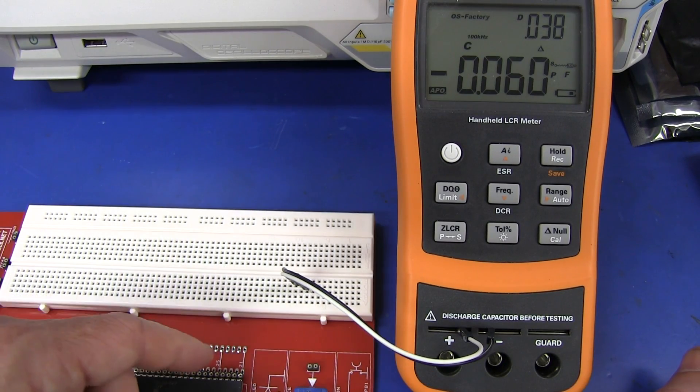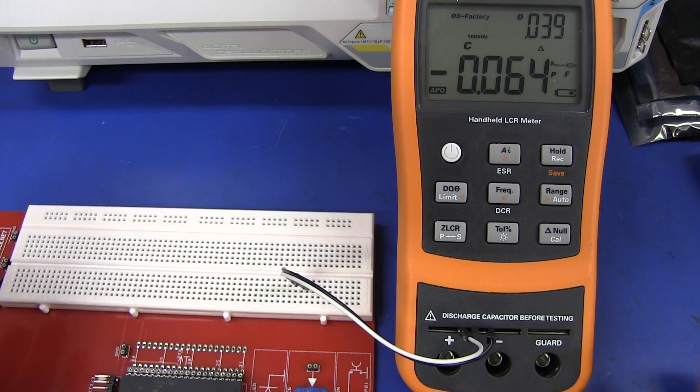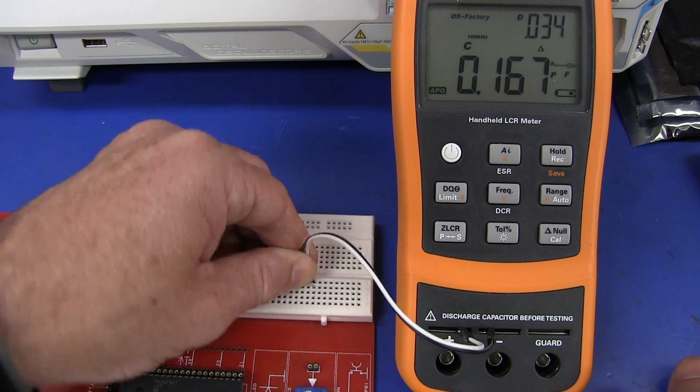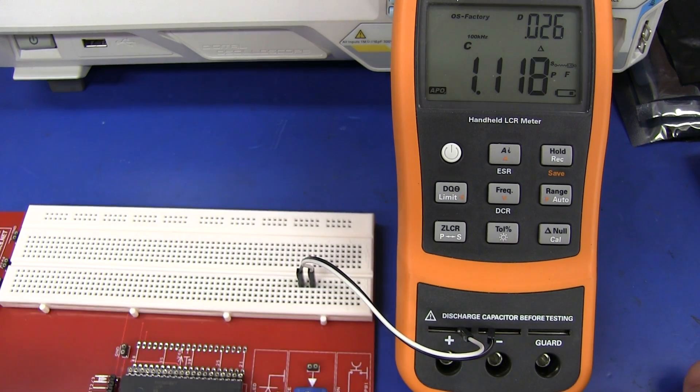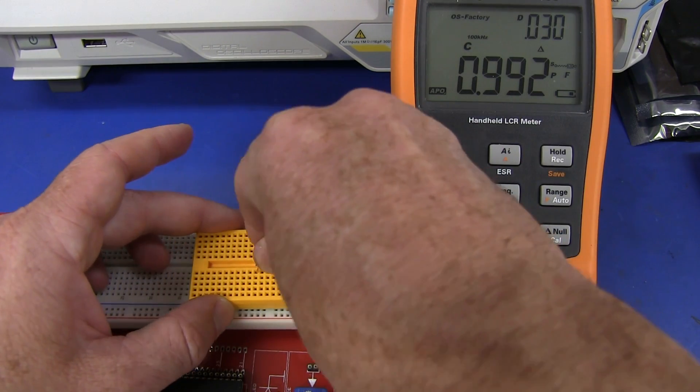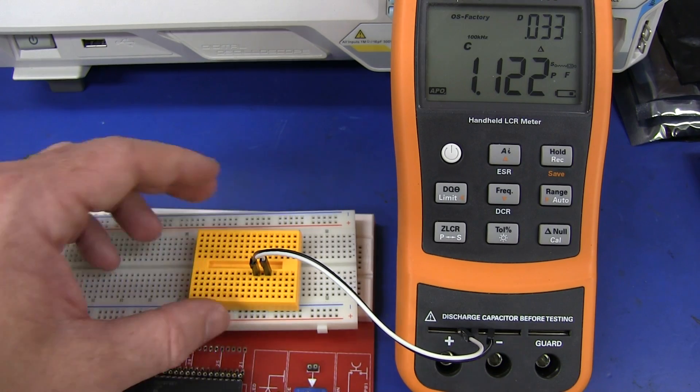One thing I haven't done yet, what is the capacitance between 2 contacts that are separated by 1 unused column? And of course, you'd expect it to halve. And yep, it does. And yep, it's the same on that one. And on that one as well. So there you go.